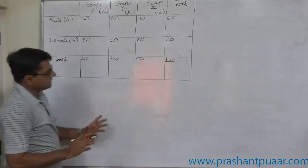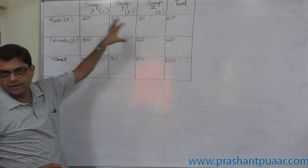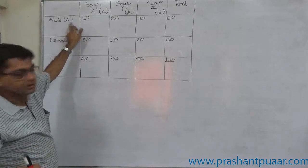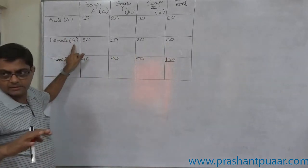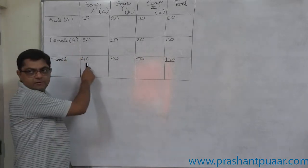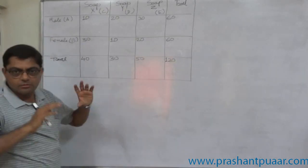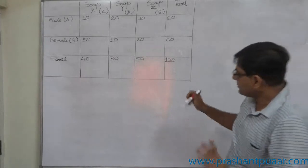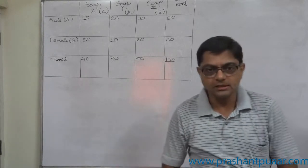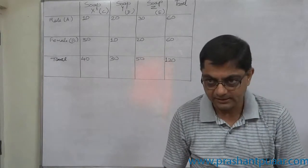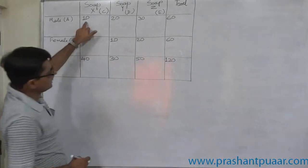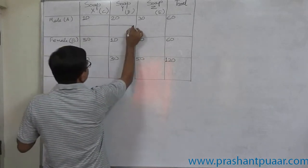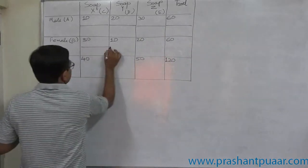In the table, these values are favorable number of cases for particular events. For example, 60 is the favorable cases for event A (any user being male), 60 for event B (any user being female), and 40 are favorable cases for event C (any user of SOP X). Similarly, 30 and 50 are favorable cases for events D and E respectively. We divide each by the total number of cases to build a joint and marginal probability matrix.